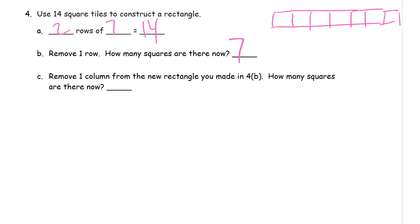And now remove a column. 1, 2, 3, 4, 5, 6, 7. There. And how many squares are there now? 6.